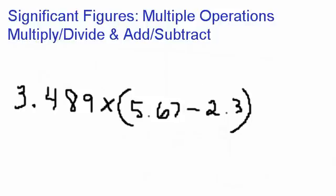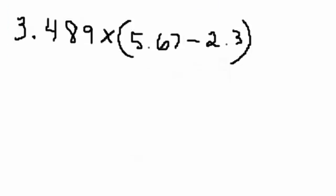If you can remember from basic math, the rules of PEMDAS says that you need to do the parentheses first. So that's the first thing we're going to do, 5.67 minus 2.3. I'm going to use the calculator to solve for that.